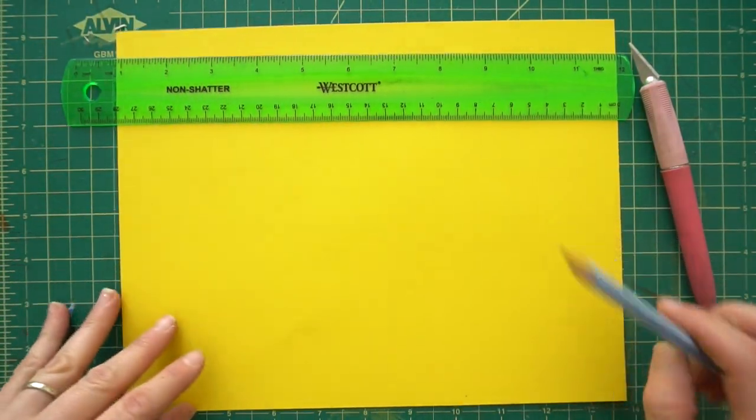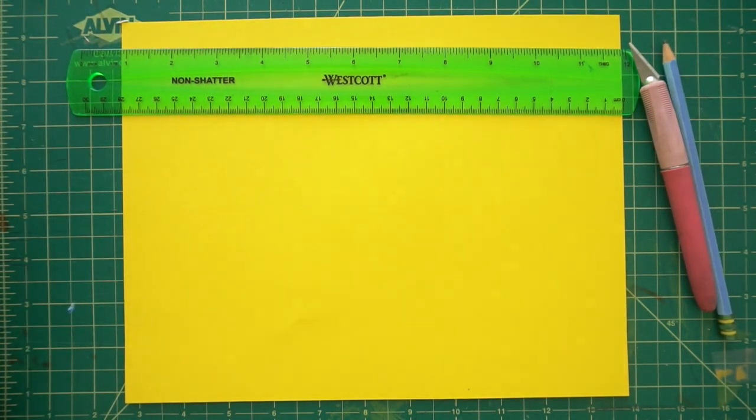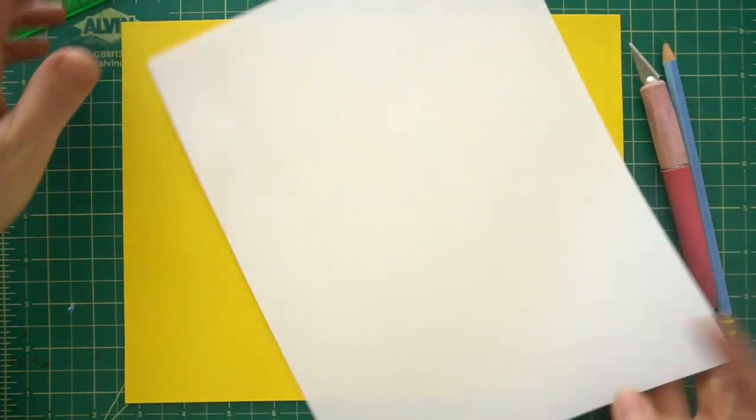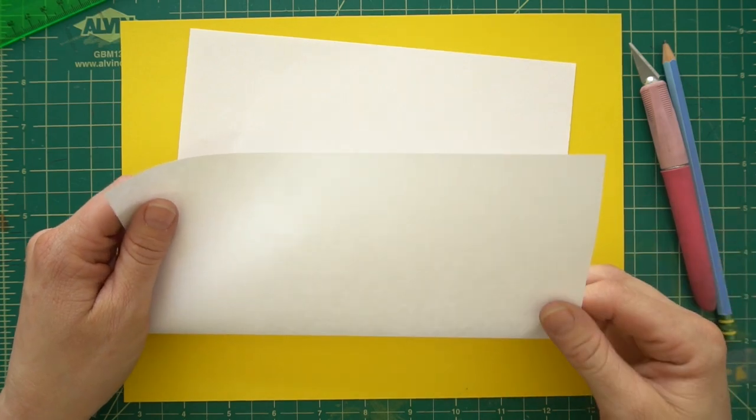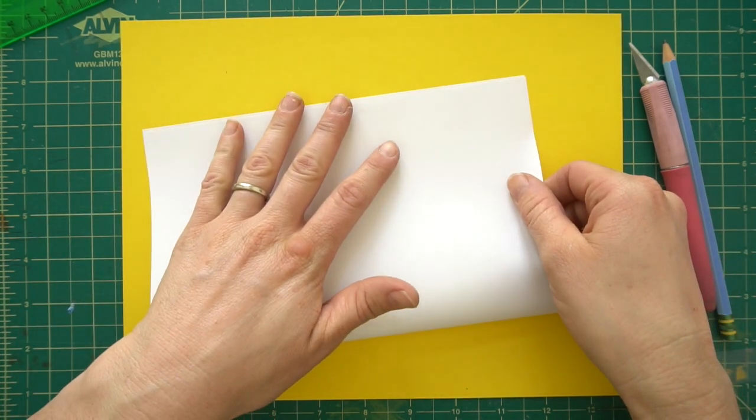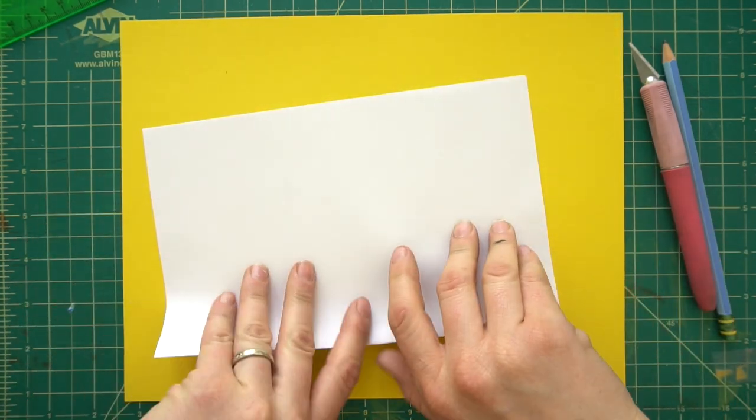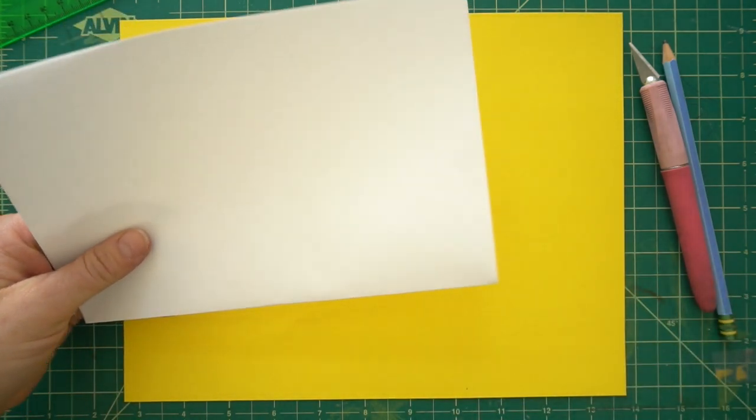Ideas for words you could use: you could write somebody's name, you could write thank you, make a thank you card, stuff like that. But before we start, I want to show you how to make a really simple step fold. And this is what we're going to be using for this project.